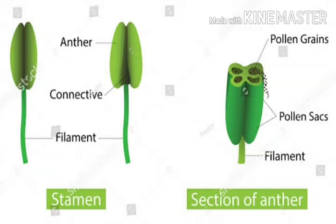Each anther has two lobes. For example, Hibiscus has two lobes connected by connective tissue. The connective tissue connects the lobes. The filament is the running stalk, and the lobe-like structure forms the anther lobes. Connective tissue is a sterile tissue that connects the two anther lobes.